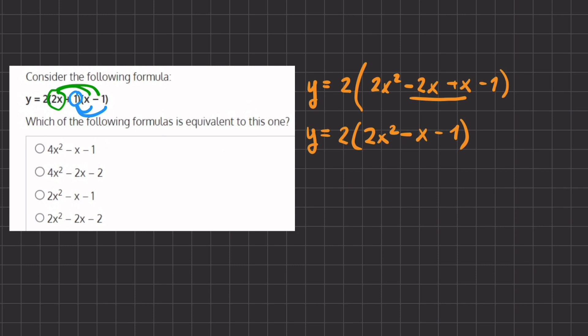Now we can distribute this 2 into our parentheses and if we do so we have y equals 4x squared minus 2x minus 2. If we take a look at our answers, this is the most simplified version and that will be answer B.